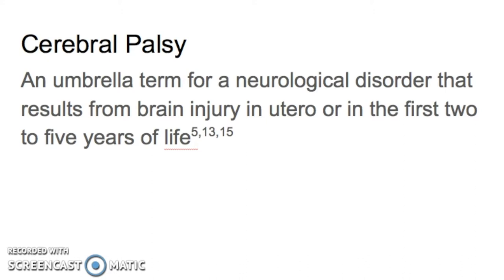While stroke describes a brain injury that occurs due to too much or too little blood in an area of the brain, cerebral palsy describes the results of many types of brain injury, including hemorrhage, hypoxic injury, infection, genetic developmental issues, or traumatic injury. What brings all these injuries together under the cerebral palsy umbrella is that they occur in utero or in the first few years of a child's life.